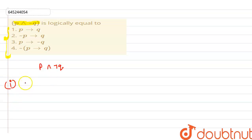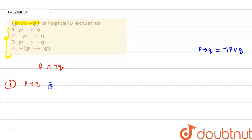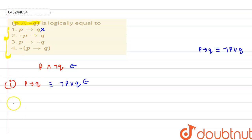Option one is p implies q. By the equivalence property, p implies q is logically equivalent to negation of p or q. We can easily see that this statement is not equivalent to p conjunction negation of q, so option one is wrong.